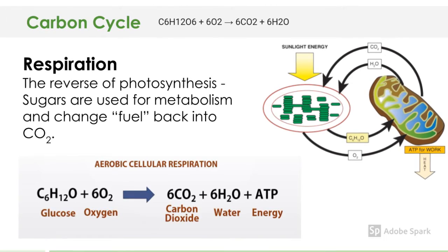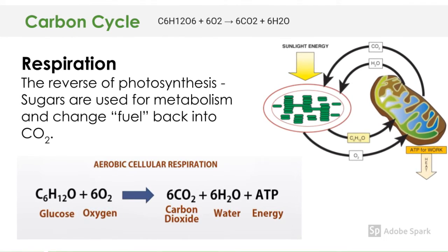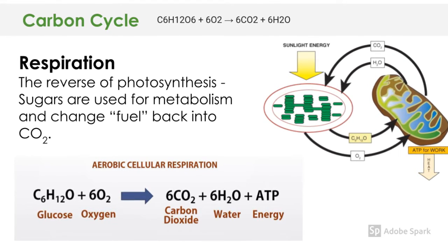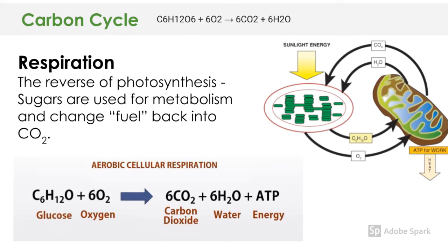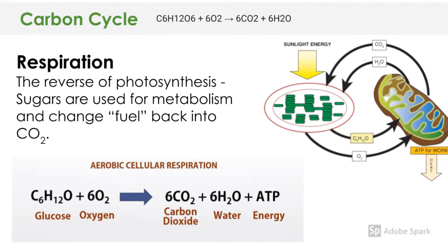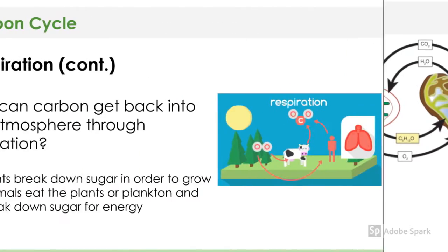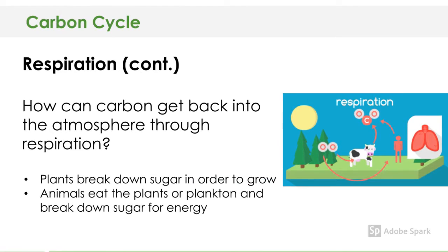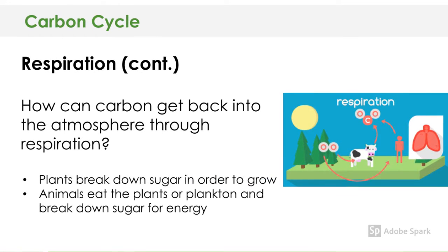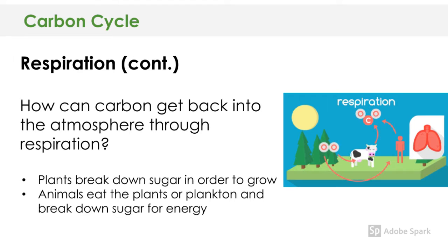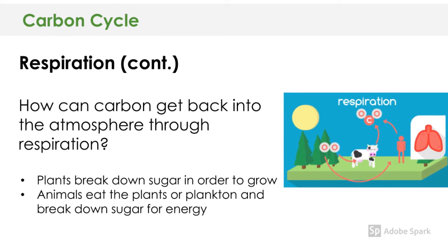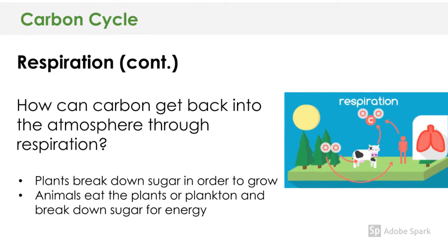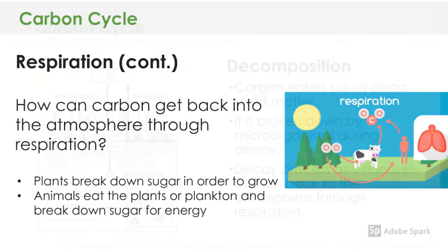Cellular respiration, on the other hand, is the reverse of photosynthesis. The sugars that we or animals consume are used for metabolism and change the fuel back into carbon dioxide, which is what we all exhale. Carbon gets back into the atmosphere through respiration — plants break down sugar to grow, or animals eat plants and break down sugar for energy.